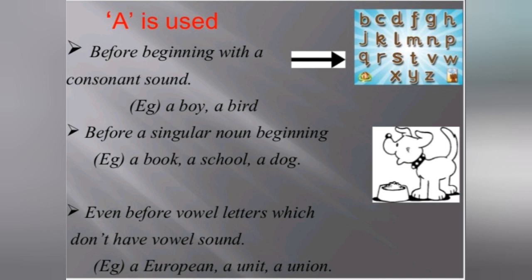Some words start with a vowel letter but has a consonant sound. For example: European, unit, union. These letters start with a y sound, so we put a European, a union.